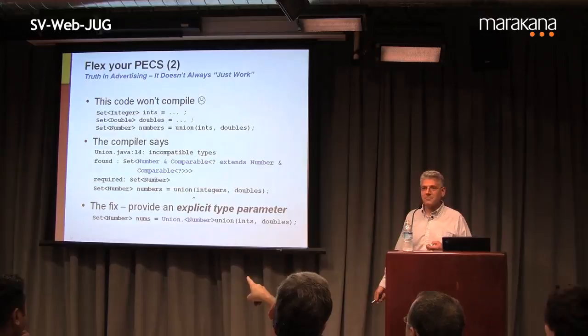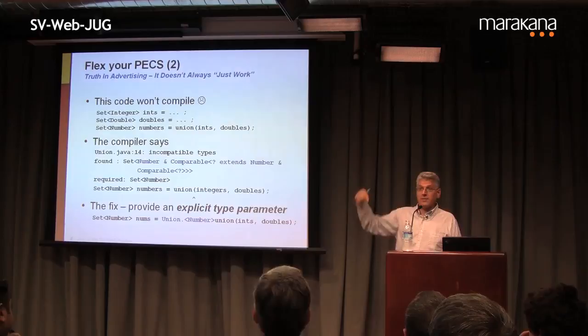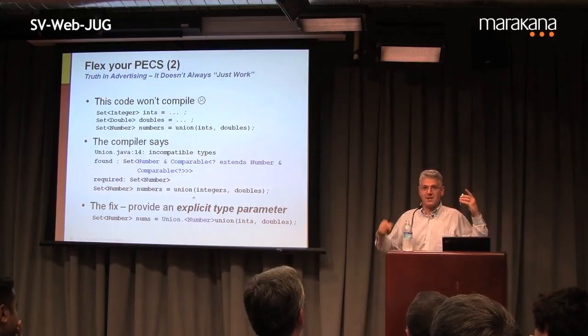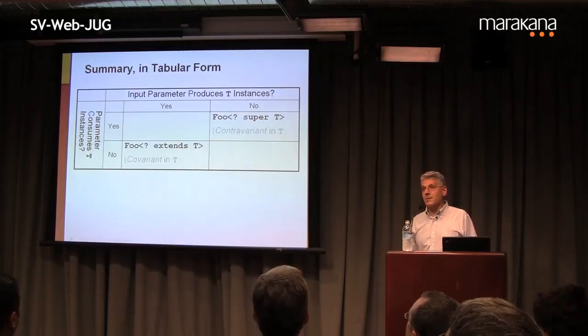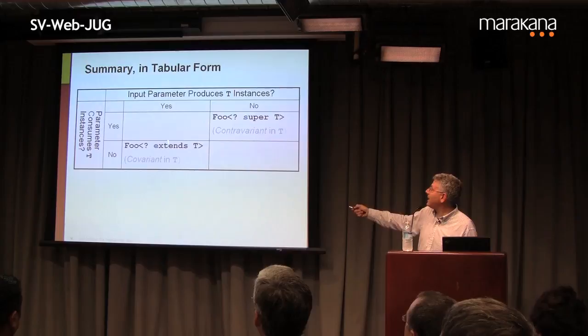Here's a summary of PECS in tabular form. Producer → extends: if the parameter produces T instances, use Foo<? extends T> (covariant in T). Consumer → super: if the parameter consumes T instances, use Foo<? super T> (contravariant in T). Both producing and consuming → use Foo<T>, invariant. Neither producing nor consuming → use Foo<?>, which means Foo of any type. Note: Foo<?> is not the same as the raw type Foo — the raw type is unsafe and the compiler cannot reason about your program's type safety.